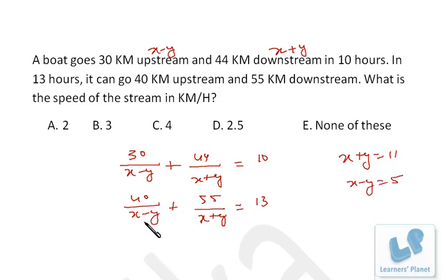You put here 40 by 5, that's 8, and 55 by 11, that's 5. 8 plus 5 equals 13. Pretty clear that x plus y is 11 and x minus y is 5. Now you need the value of y, speed of the stream. If you need the smaller value, deduct this from this and divide by 2.